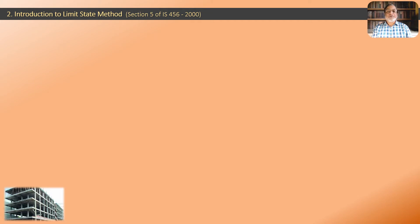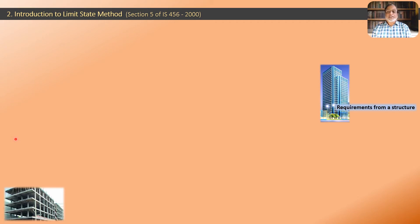In the second part of this video lecture, we are going to get introduced to the limit state method of design for RCC structures, as described in Section 5 of IS 456-2000. The limit state method is what we are going to use for the design of RCC buildings. Let us first consider a structure which we want to design — it has some fundamental requirements from the design. There are 3 requirements.